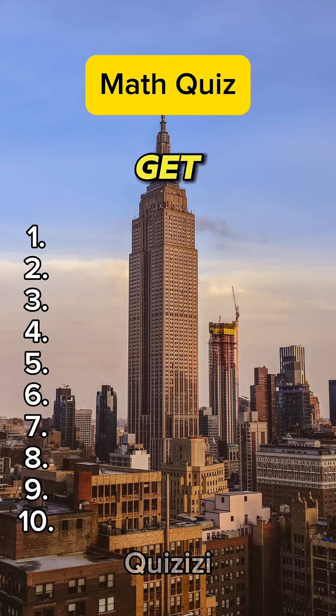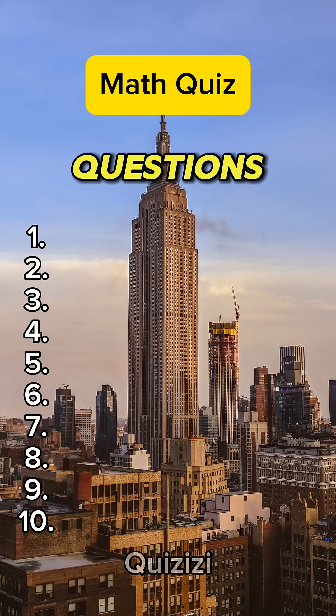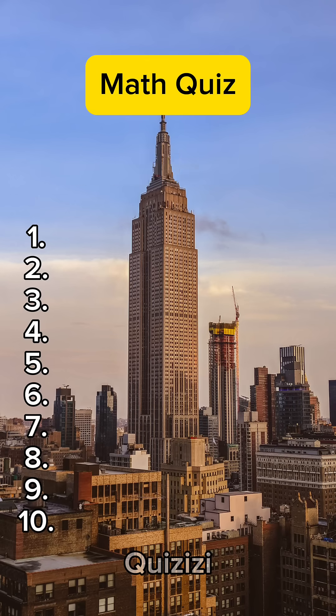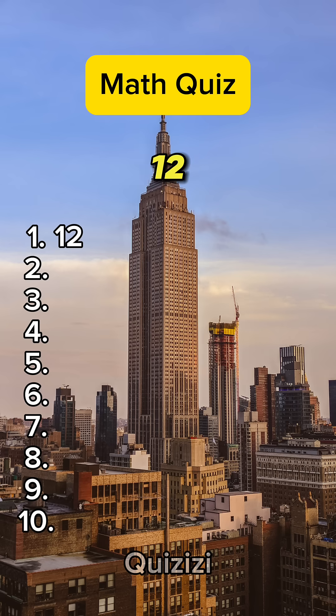Only smart Americans can get all 10 questions correctly. Question 1: What is 7 plus 5? 12.